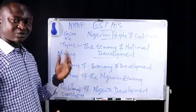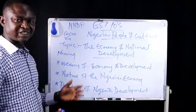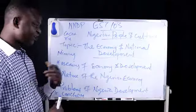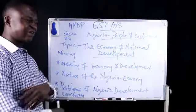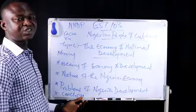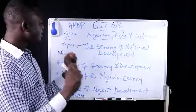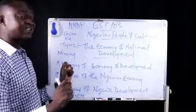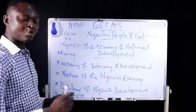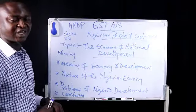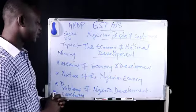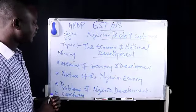For example, in Kogi State, we have bitumen, we have bauxite, we have kaolin. Almost all the solid minerals that you will need in the world today are domiciled in one part of Nigeria or the other, also contributing to the economy of Nigeria.